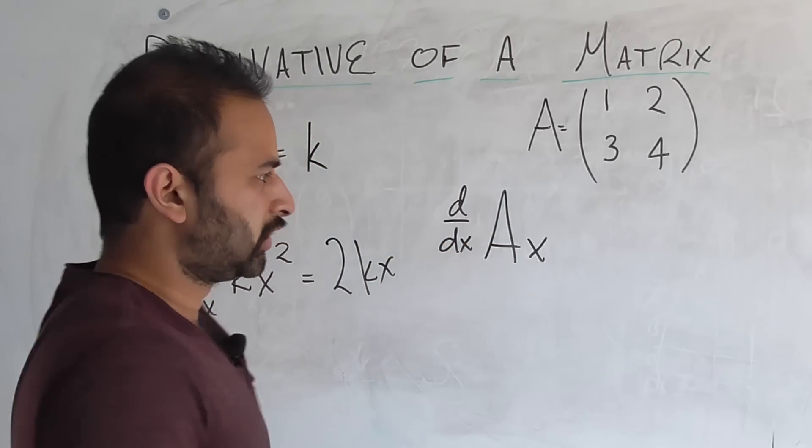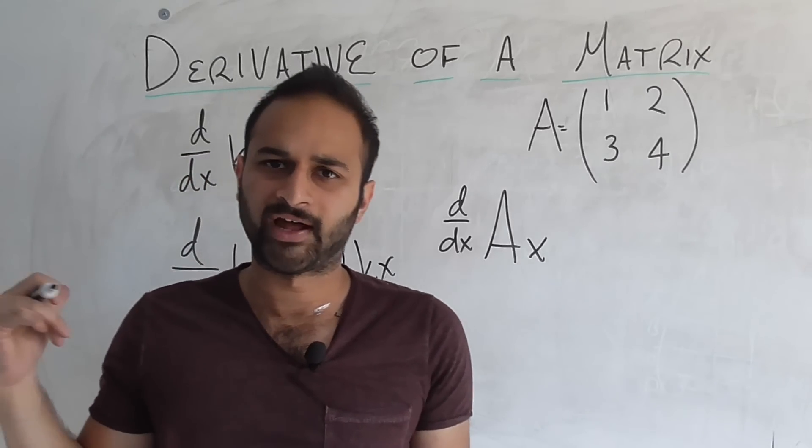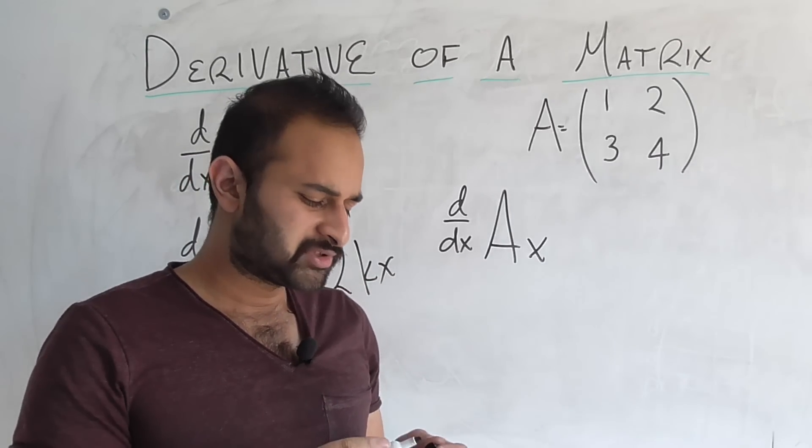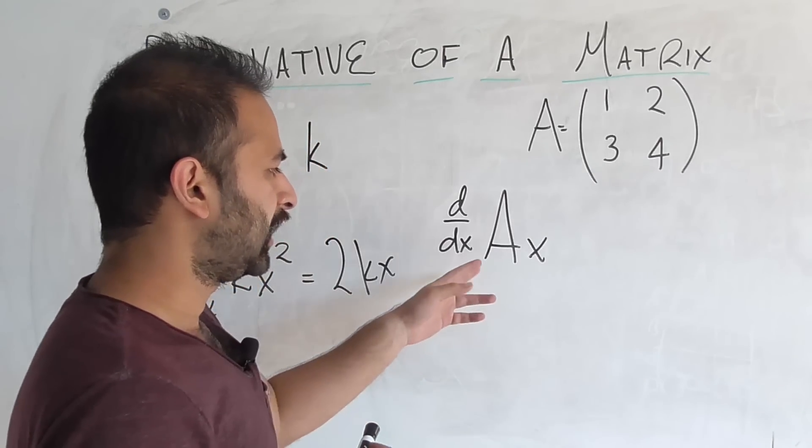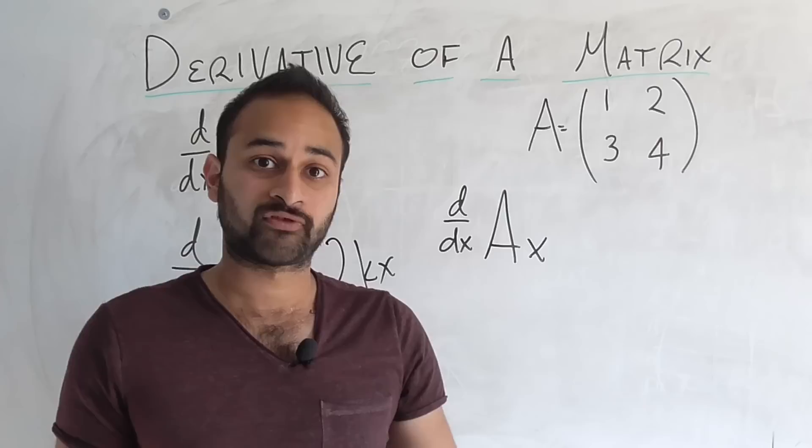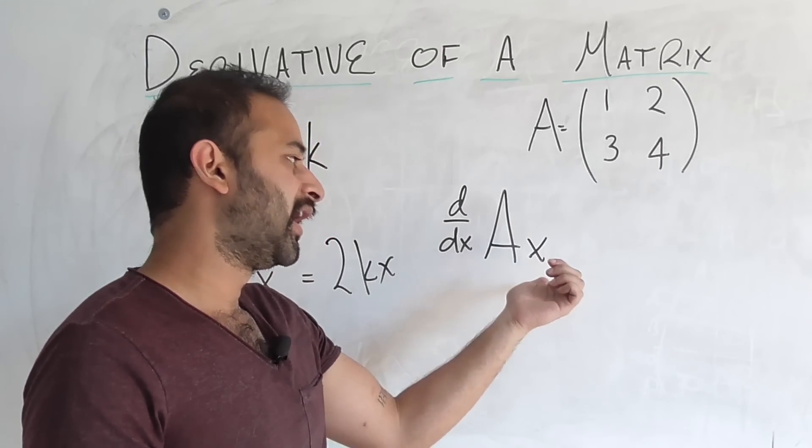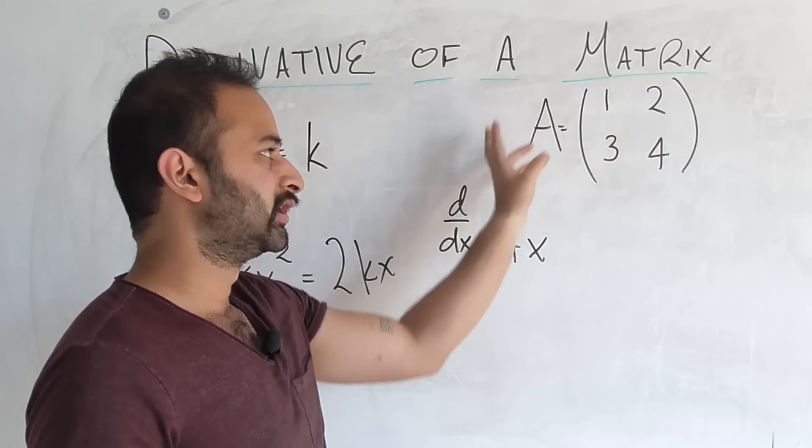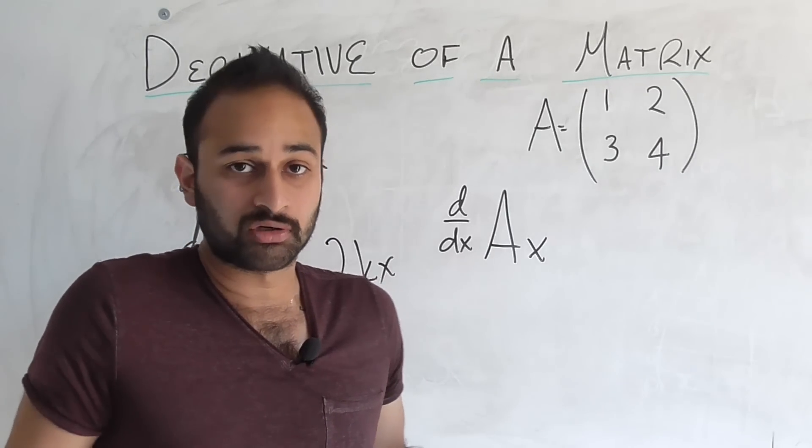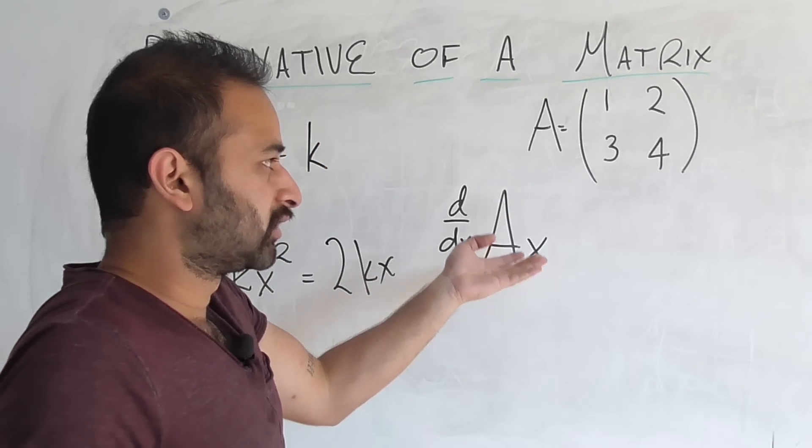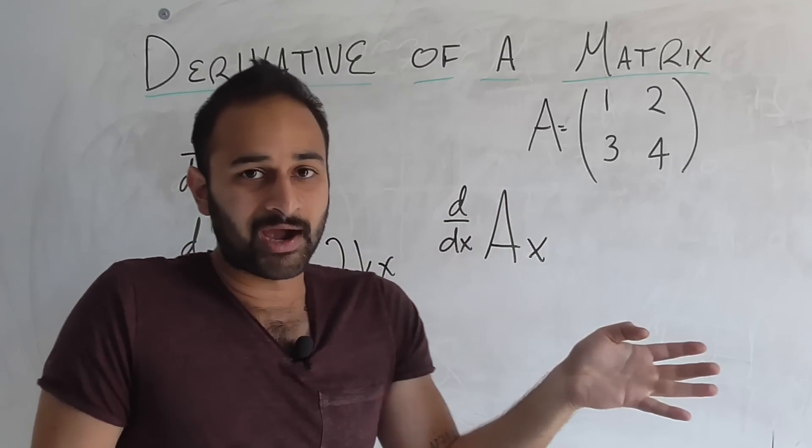Well, that doesn't really seem as clear as these easier problems we did on that side of the board, right? But at the same time, there should be some kind of definition for this, because A times x is a function, after all. We're taking the vector x and running it through this linear transformation A. Remember, a matrix is just a linear transformation. So we're taking this vector, running it through linear transformation A, and we're getting some output back.